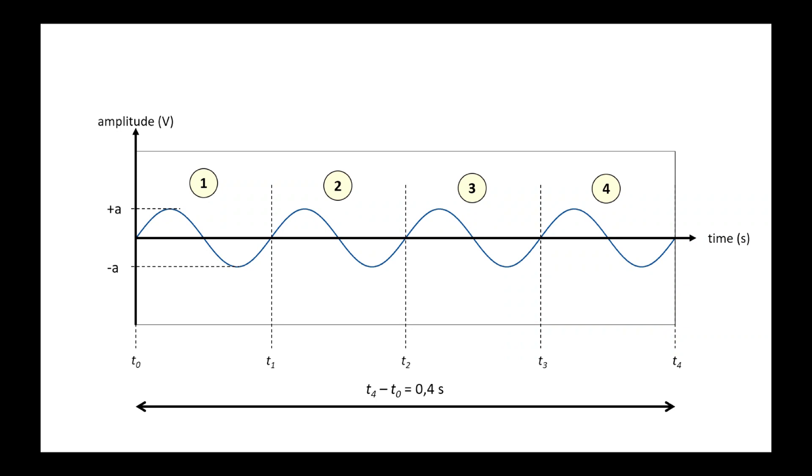Here, for example, there are four oscillations over a period of 0.4 seconds. This corresponds to a frequency of 10 Hz. The frequency is calculated by the ratio between the number of periods, and the time elapsed. In other words, it is the number of oscillations per second. The official unit of frequency is Hz, which is the reciprocal of a second.